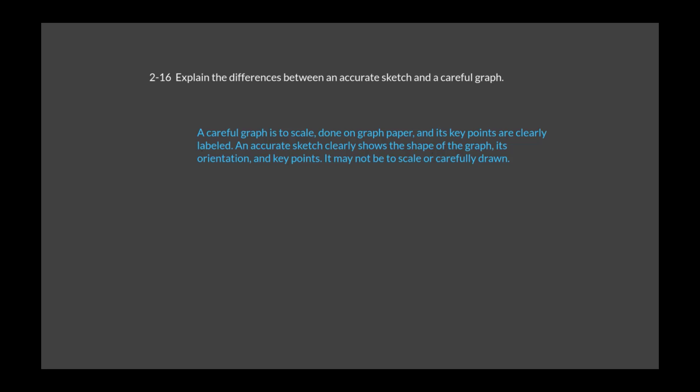Problem 2-16 says: explain the differences between an accurate sketch and a careful graph. A careful graph is to scale, done on graph paper, and its key points are clearly labeled. An accurate sketch clearly shows the shape of the graph, its orientation, and key points. It may not be to scale or carefully drawn. A lot of times I will want students to specifically plot things and at least three points so I can see what the gist of their graph is.